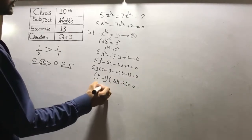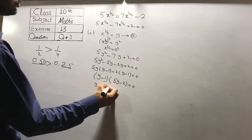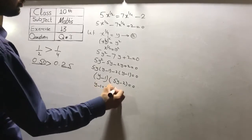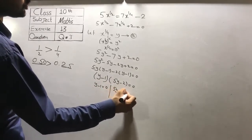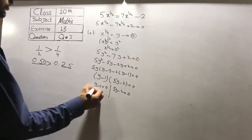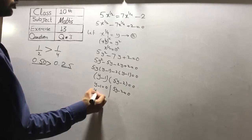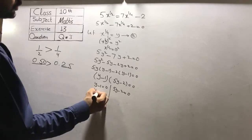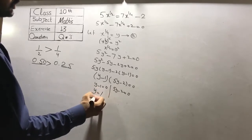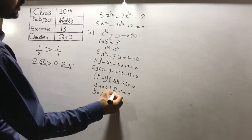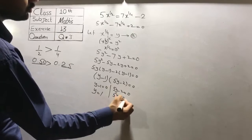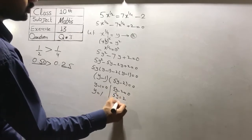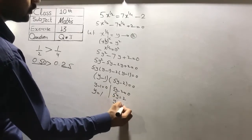So y minus 1 is equal to 0, and 5y minus 2 is equal to 0. Therefore y is equal to 1 (minus 1 moves to the right side as plus 1), and 5y is equal to 2, so y is equal to 2 over 5.